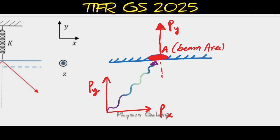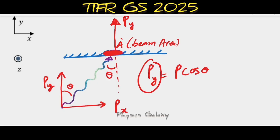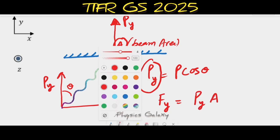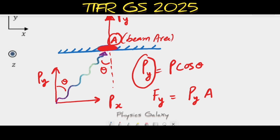This angle is θ, so Pᵧ will be the total pressure times cos θ. This pressure will be balanced by the spring force. If the area of the beam is A, then the force exerted in the y direction will be Pᵧ times A, and this force will be balanced by the spring force, which equals k times Δx.